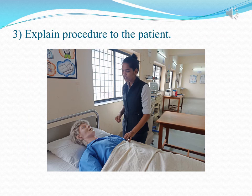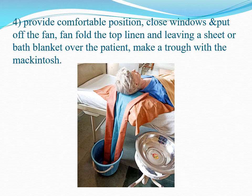Step 4: Provide a comfortable position. Close windows and put off the fan. Fan fold the top linen to the foot end and cover the patient with a bath blanket or sheet. Make a throw with the mackintosh and place it under the client's head.